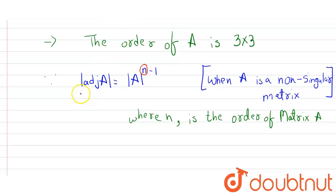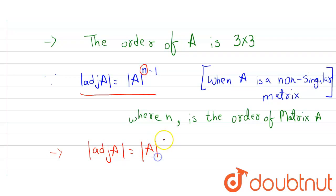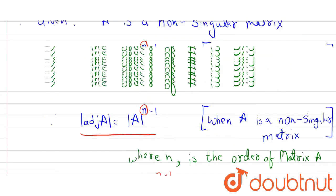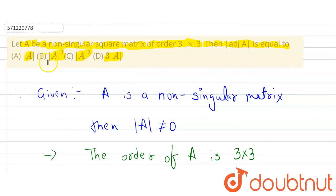Now, using this, let's write it again. The determinant of adjoint A equals the determinant of A whole to the power (n−1). Since here n is 3, it would be the determinant of A to the power 3−1, which is 2. Hence, the determinant of adjoint A equals the determinant of A whole squared. Hence, the correct option is option B.